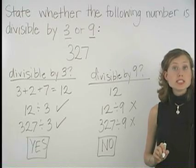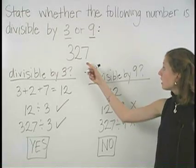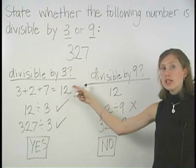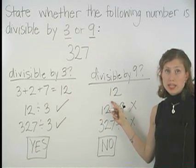So notice that the divisibility rules told us that 327 is divisible by 3, but is not divisible by 9.